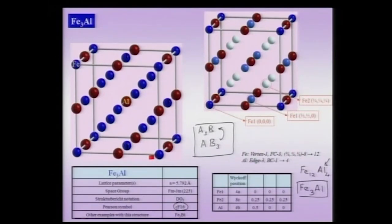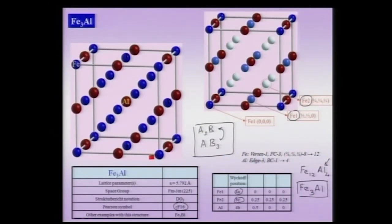I am designating two different iron positions: iron-1 and iron-2. To understand this, we use what is known as the Wyckoff position. These have been designated in Wyckoff notation as 4A and 4C. Iron-1 is located at 0,0,0 and equivalent positions; iron-2 is located at 1/4, 1/4, 1/4 positions and equivalent positions. The DO3 structure is just a listing notation, while cF16 gives the rationale of the Pearson symbol.